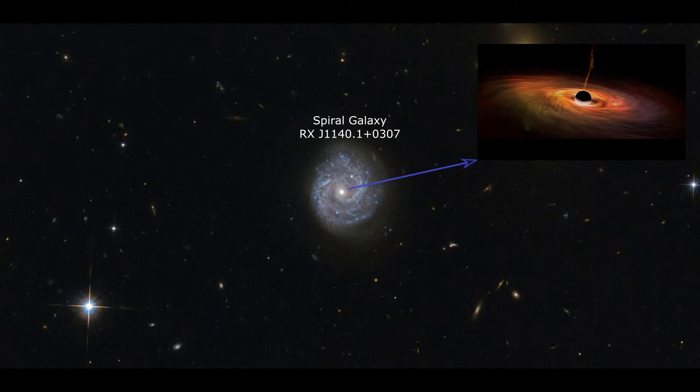RxJ 1140.1-0307 is a spiral galaxy centered on a lighter intermediate-mass black hole. A team at the ASKAP radio telescope in Australia announced in 2012 that it had discovered the first intermediate-mass black hole. Intermediate-mass black holes are too massive to be formed by the collapse of a single star, which is how stellar black holes are thought to form.